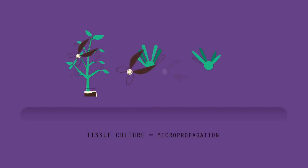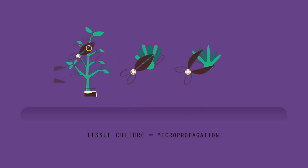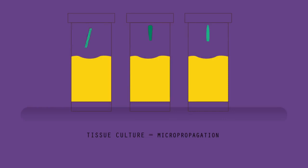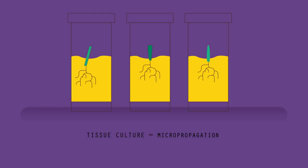A few cells are taken from the parent plant and placed onto a nutrient jelly using antiseptic technique — this means making sure no microorganisms contaminate the jelly. The cells will start to differentiate and form new plants.